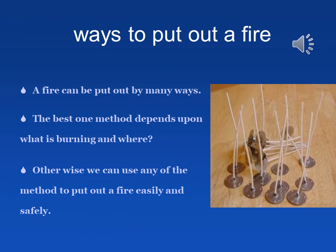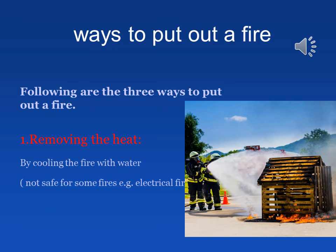Dear students, we are going to study different ways to put out a burning fire. A fire can be put out by many ways, and the best method depends upon what is burning and where. The three ways to put out a fire are: first, removing the heat — we can remove the heat by cooling the fire with water, though this is not safe for some fires, for example electrical fires.